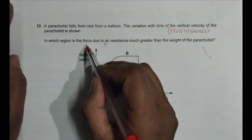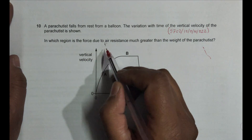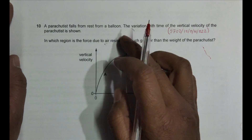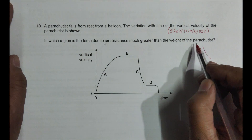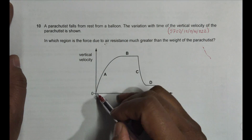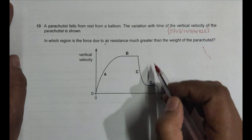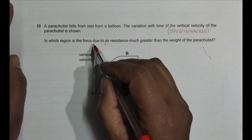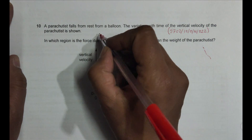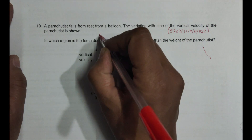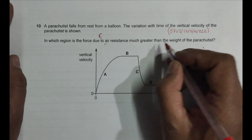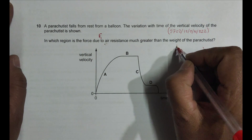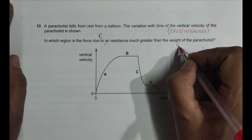We have to identify in which region the force due to air resistance (fo) is much greater than the weight of the parachutist (Fg). So let me define the opposing force as fo and the weight as Fg.